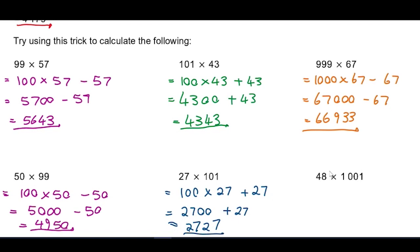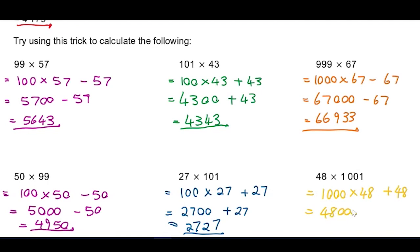The last multiplication: 48 × 1001. That's 1000 lots of 48 plus one more lot of 48, so 48,000 + 48 = 48,048.